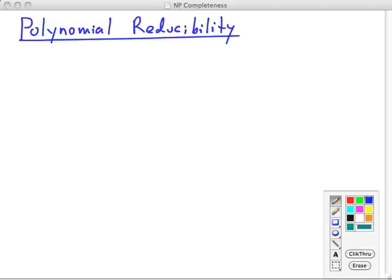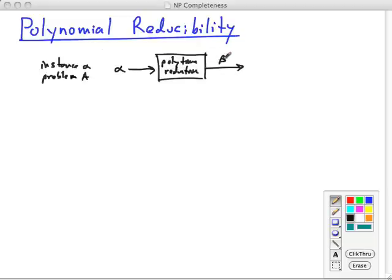So polynomial time reducibility looks like this. Let's suppose we have an instance alpha of problem A, and we want to solve that problem, but we don't have a direct way of solving A, but we do have a way to solve B. So we might take alpha and input it into a box that does polynomial time reduction of instance alpha into instance beta of B.